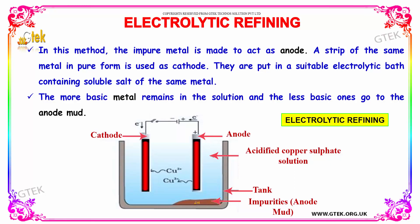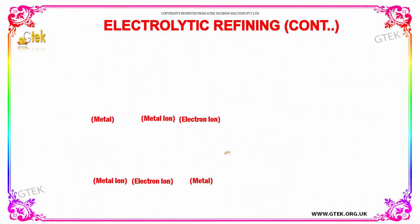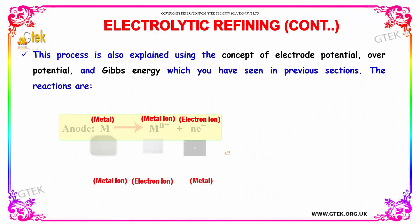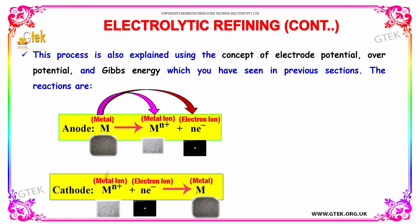You are able to see the impurities here, and the pure metal will get settled here. This process is also explained using the concept of electrode potentials, over-potential, and Gibbs energy.